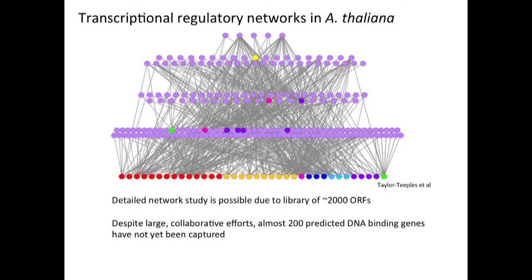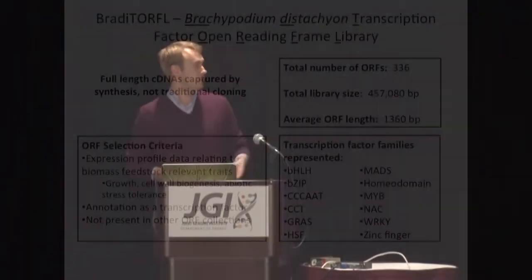Another example of how well-defined the Arabidopsis model is: we have cell wall biosynthetic genes at the bottom and a tiered network of detailed transcription factor interactions above. This level of resolution is possible because of the large genetic resources available for Arabidopsis — an open reading frame library of over 2,000 ORFs assembled by groups such as Salk, Reakin, and Kay. But despite this large-scale effort, there are still about 200 predicted DNA-binding genes not captured in these collections. We really want to take Brachypodium's ORF library and enrich it to achieve the same level of detailed study in grasses.